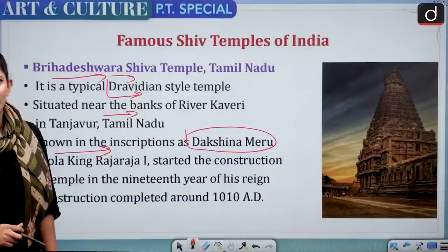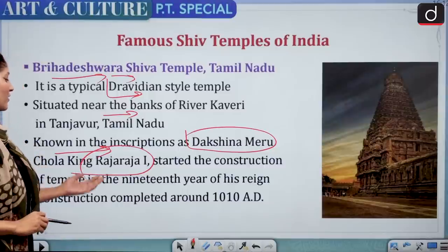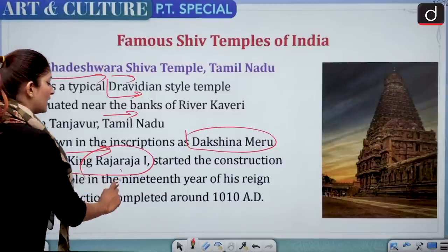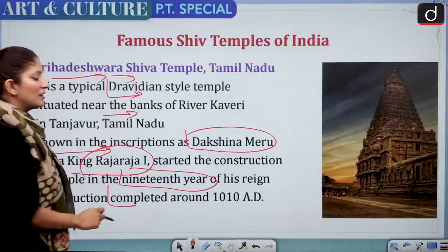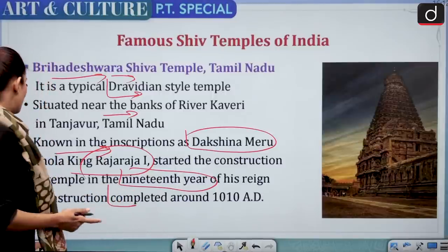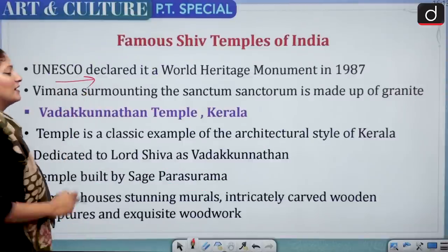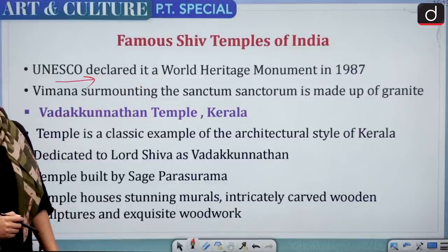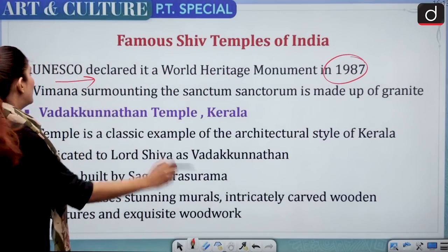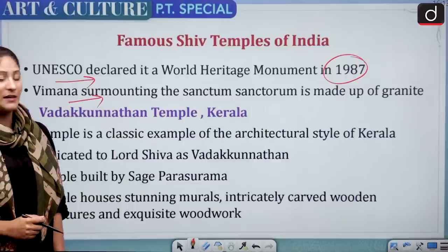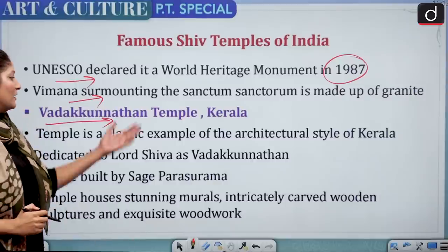Dakshina Meru means the mythological highest mountain peak of the south — that's what Brihadeshwara Shiva Temple of Tamil Nadu is called. Chola King Raja Raja I started construction in the 19th year of his reign, and construction was completed around 1010 AD. It was declared a UNESCO World Heritage Site in 1987. The Vimana surmounting the sanctum sanctorum is made up of granite.